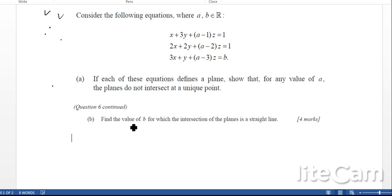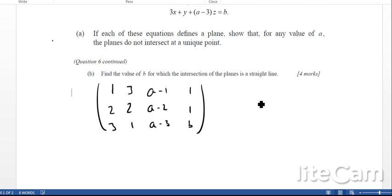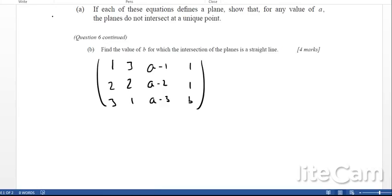The easiest way to do this kind of question is Gaussian elimination. The first thing that we do is write it in terms of a matrix. So we've got 1, 3, a minus 1, 1; 2, 2, a minus 2, 1; and 3, 1, a minus 3, and b. This is the matrix that we've got.